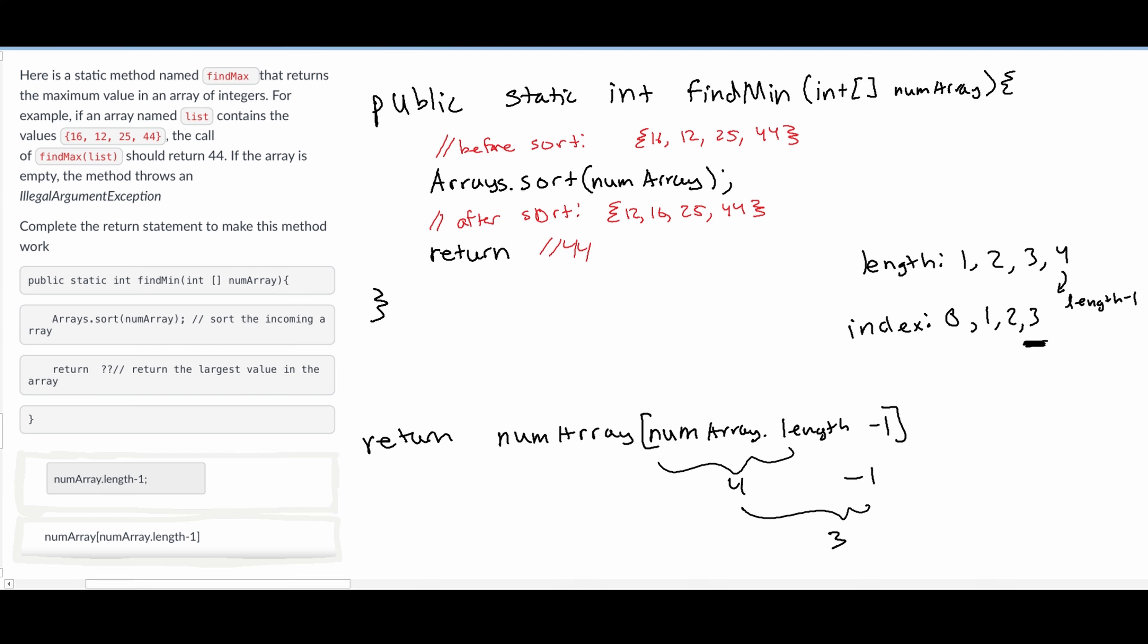So this is going to be our answer right here, and we can see out of the possible answers that it matches this. So that's the theory behind this array.